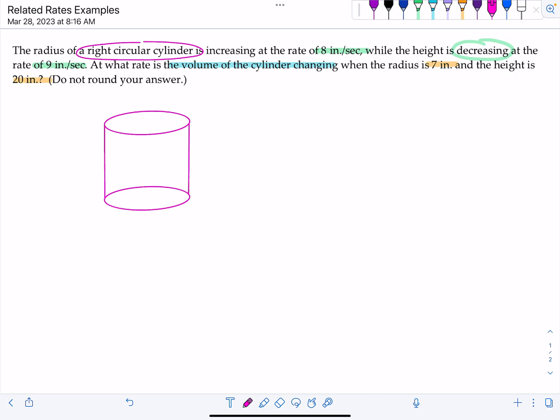Now let's introduce some notation. They told us that the radius is increasing at a rate of 8 inches per second. So that's a derivative. That means dr/dt is equal to 8 inches per second. And then the height is decreasing. That's going to make it a negative 9 inches per second. And then they want to know what rate is the volume changing. So they want dV/dt when the radius is 7 inches and the height is 20 inches. You're going to plug those in at the very end. Not now.